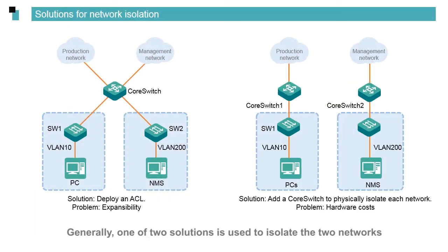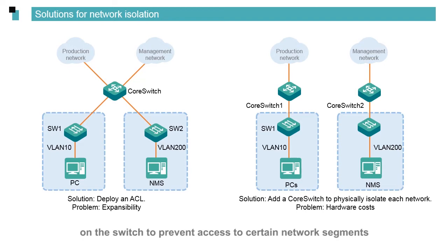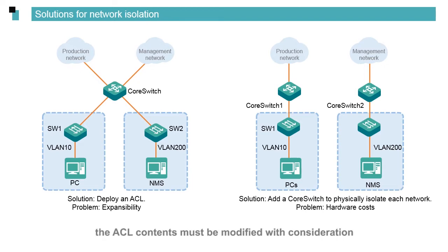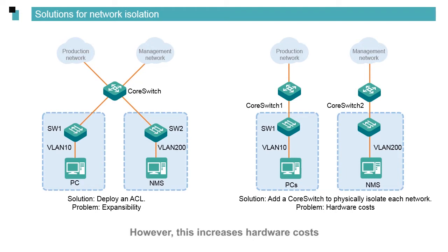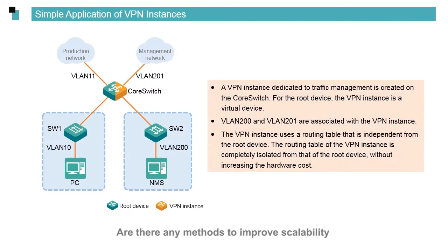Generally, one of two solutions is used to isolate the two networks. In the first solution, an ACL is configured on the switch to prevent access to certain network segments. However, the scalability of an ACL is poor — if a new network segment appears, the ACL contents must be modified with consideration of the traffic coming into or going out of the device. In the second solution, two isolated physical networks are created with a core switch serving as the gateway for each network. However, this increases hardware costs.